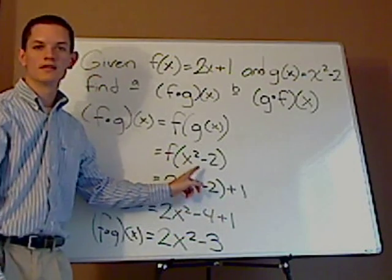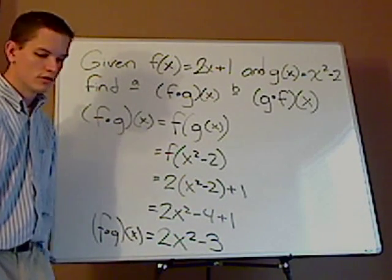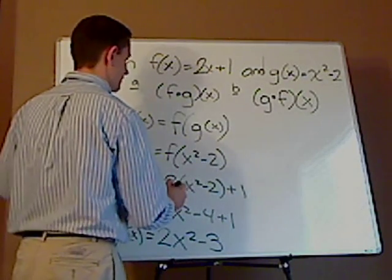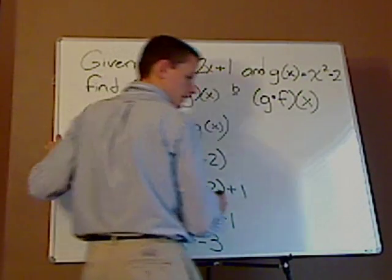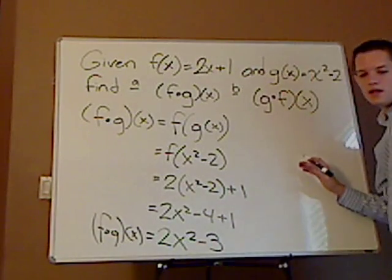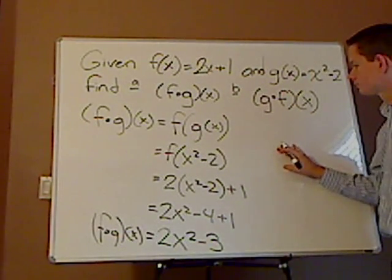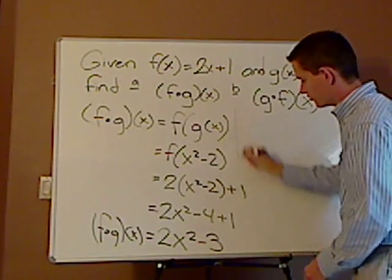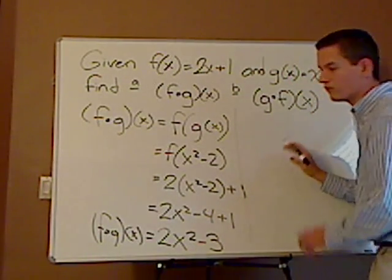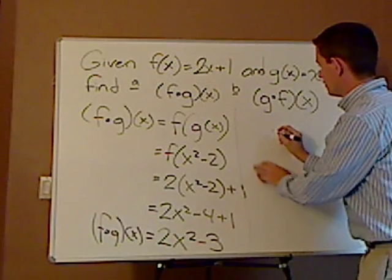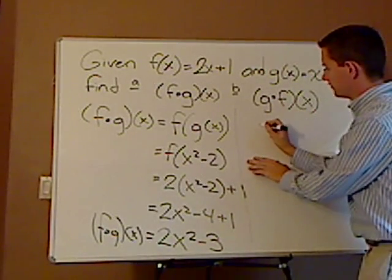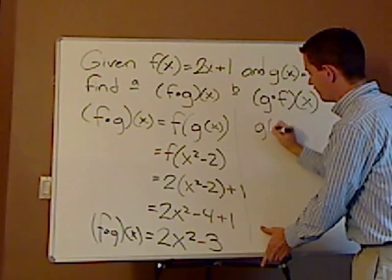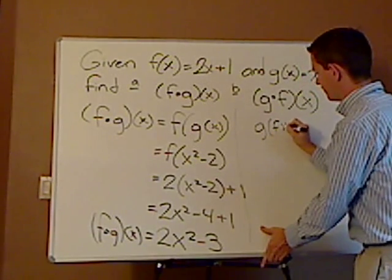Alright, now let's find goof. Goof is going to be slightly more complicated. So let me write it on the side, right here. And also, to save some room, I'm just going to put it over here. So you have goof. Goof is g of f of x.